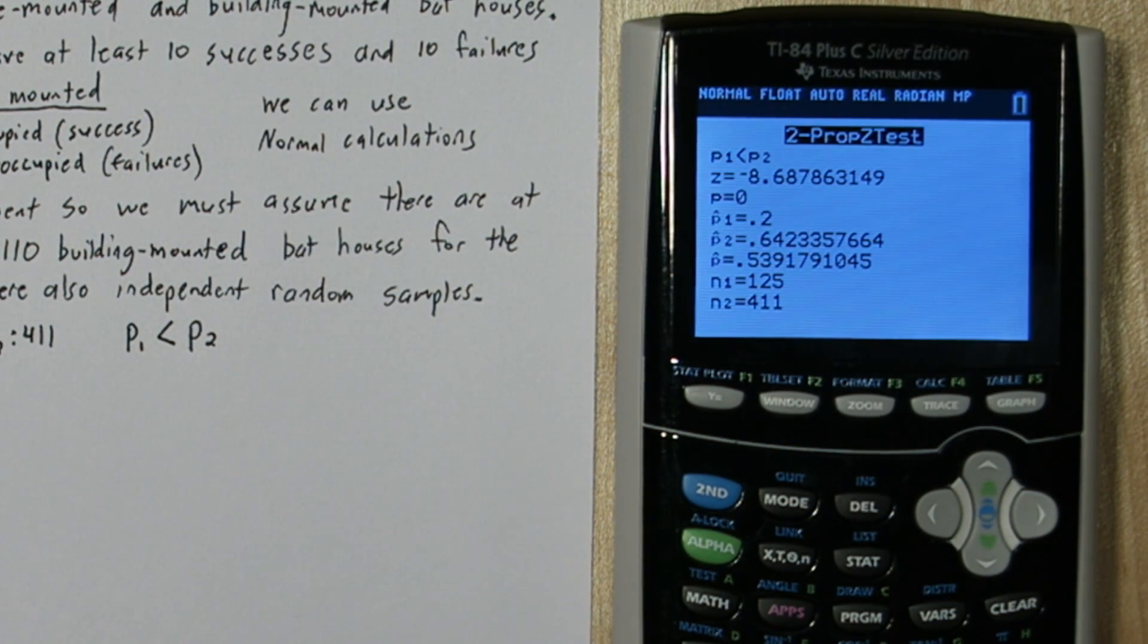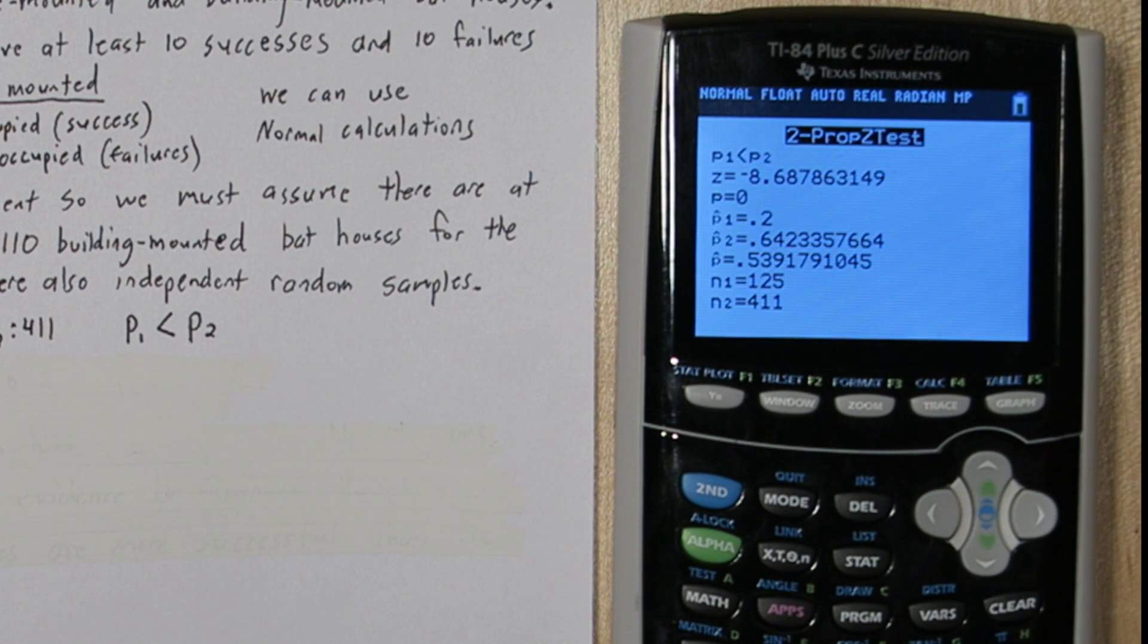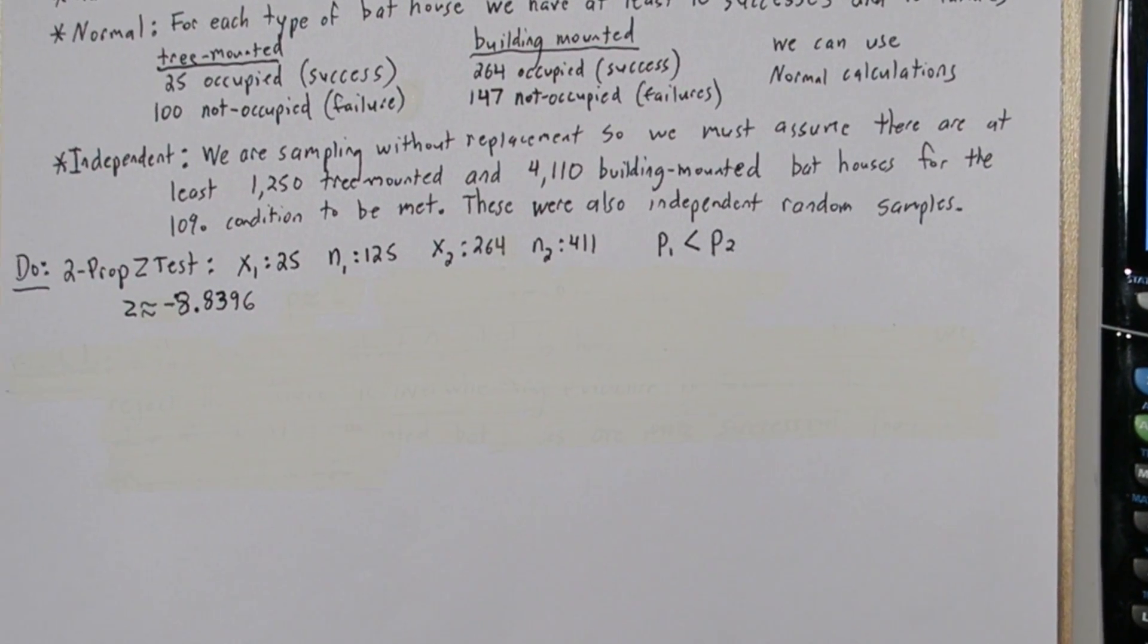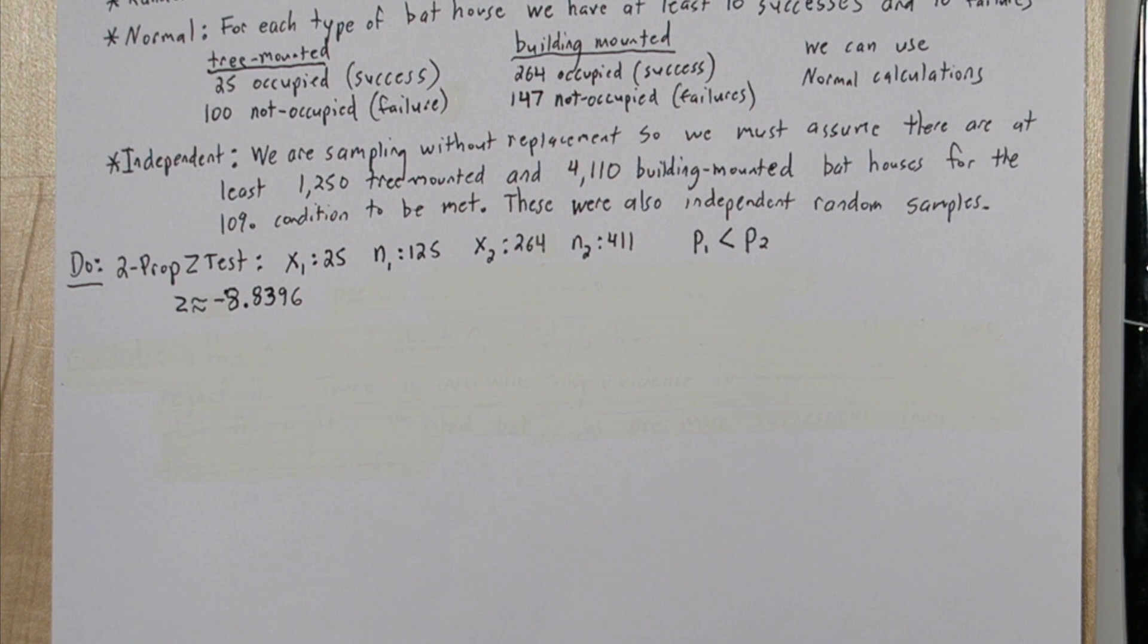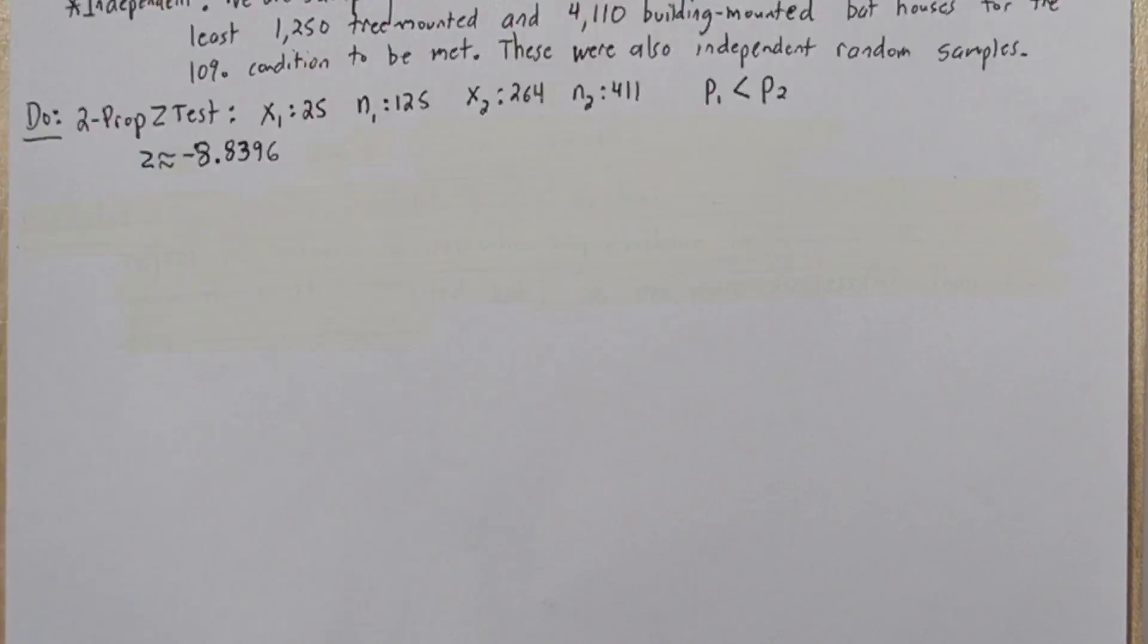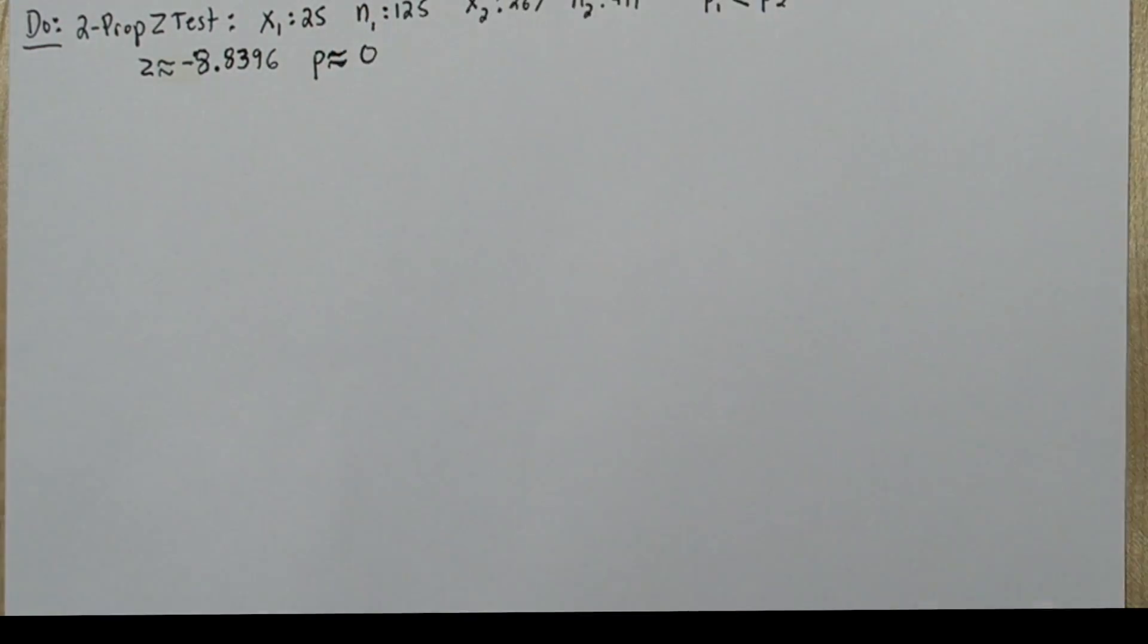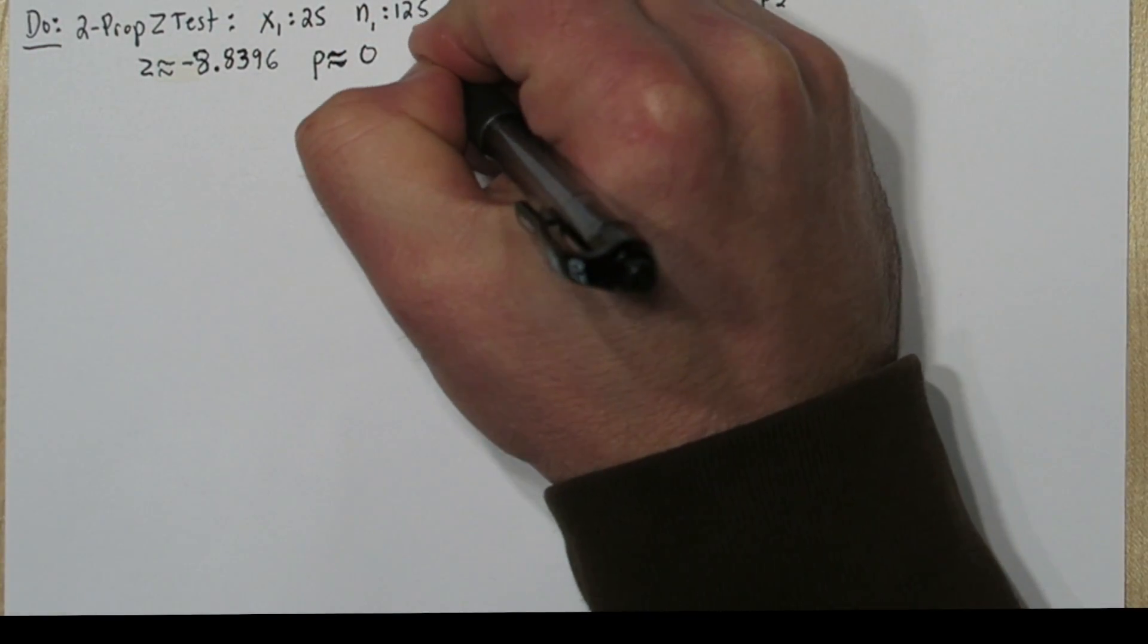We're going to copy everything we input into this function, as well as all the output we get into our DO step. A z-score of more than negative 8 is very, very far from what we'd expect if there was no difference in these proportions. So that's why we're ending up with a p-value of about 0. There's overwhelming evidence to reject the null hypothesis.